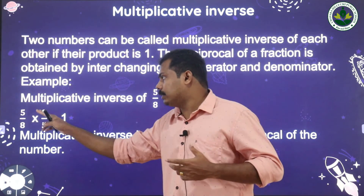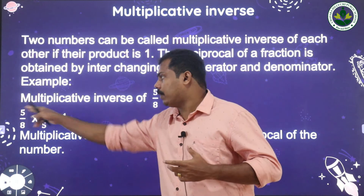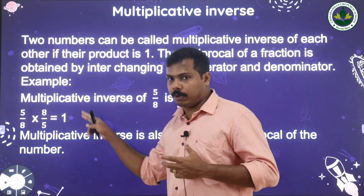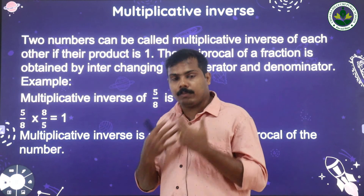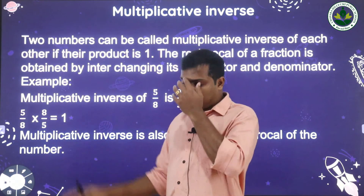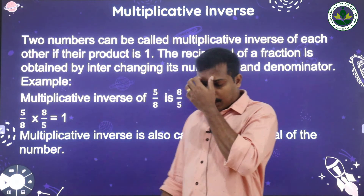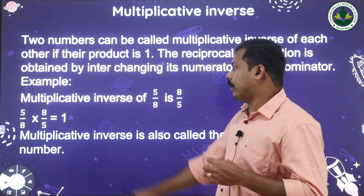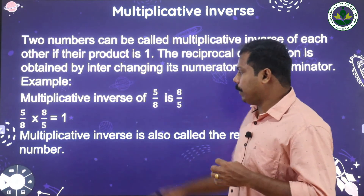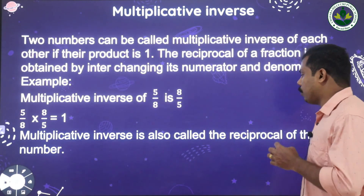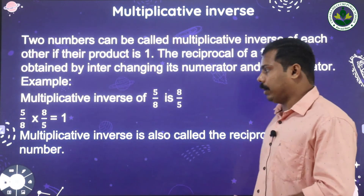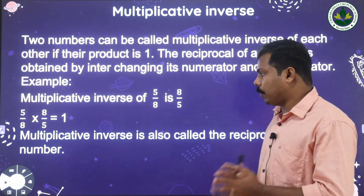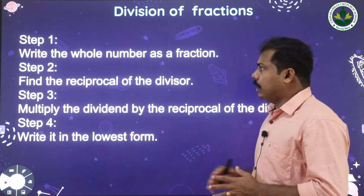Let's verify: 5/8 multiplied by 8/5. Multiply 5 into 8 equals 40, and 8 into 5 equals 40. So 40 divided by 40 is 1. The product of two multiplicative inverses is 1. Multiplicative inverse is also called the reciprocal of the number.